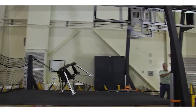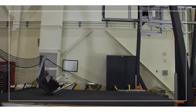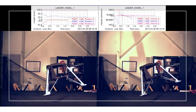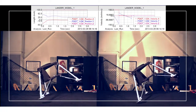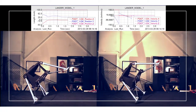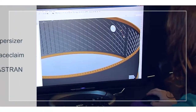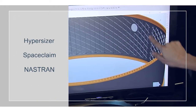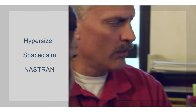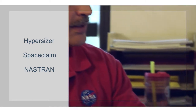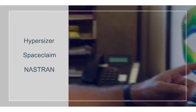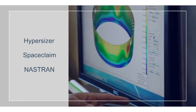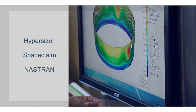Marshall's state-of-the-art design and analysis software tools provide the ability to develop and analyze complex 3D models and schematics. Those tools include Hypersizer — a design, analysis, and optimization software for composite and metallic structures — SpaceClaim, and Nastran, NASA's structural analysis software.